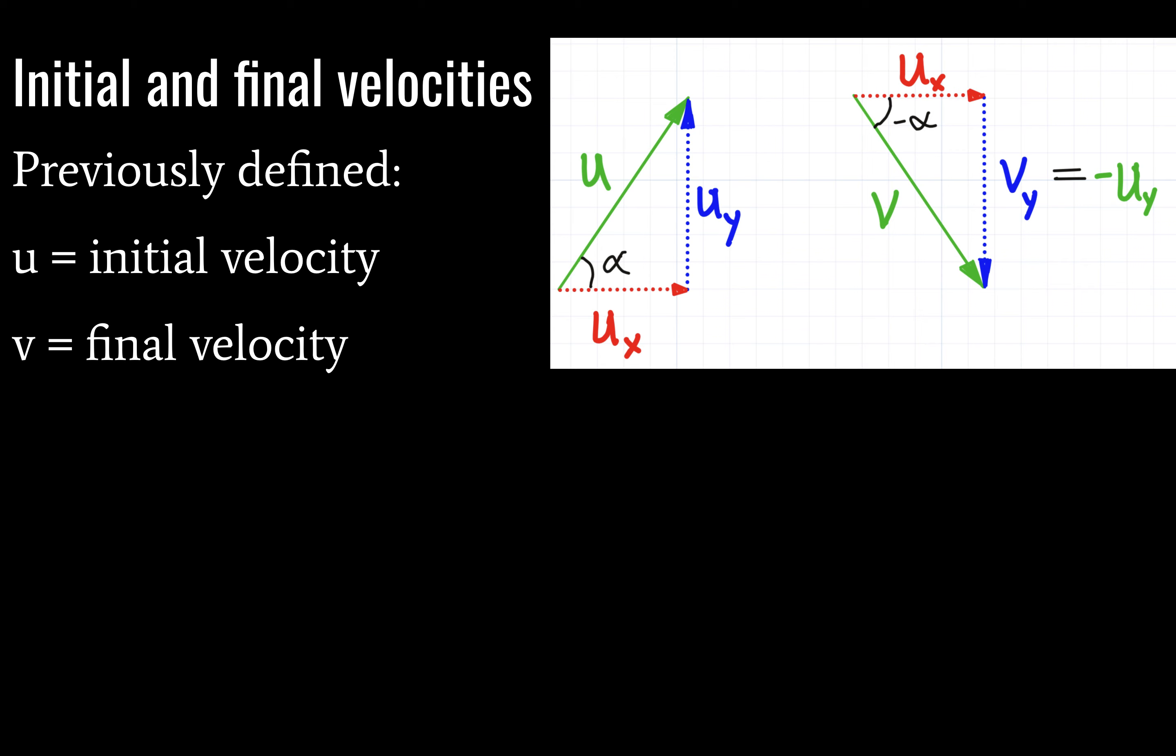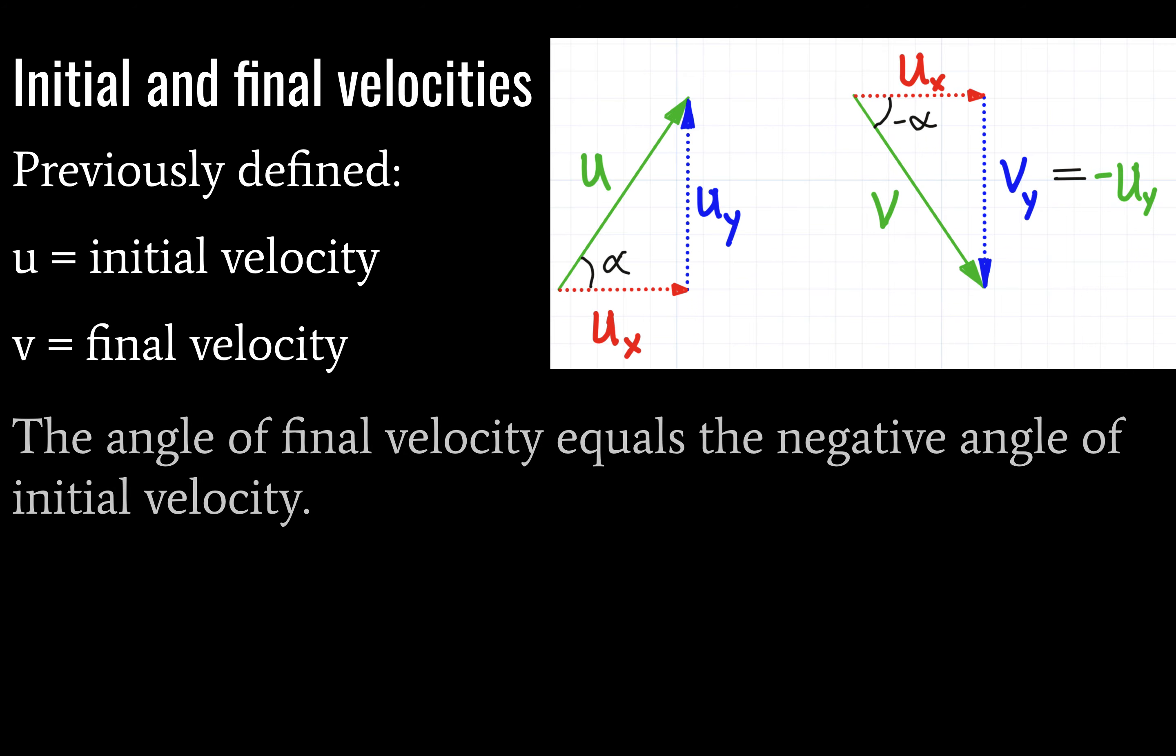So initial and final velocities, let's take a little closer look here. We have previously defined u as initial velocity, and we have defined v as final velocity. This is the case in your data booklet. And you should make a note, you should define your variables whenever possible in your data booklet. I recommend annotating your data booklet, as I've told you in class already.